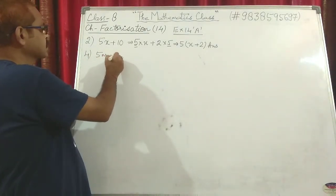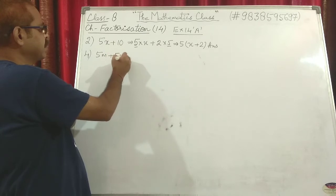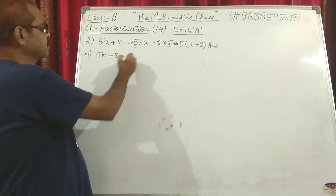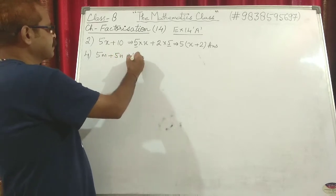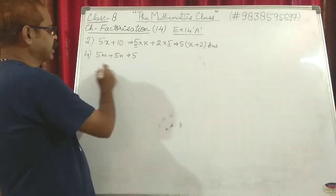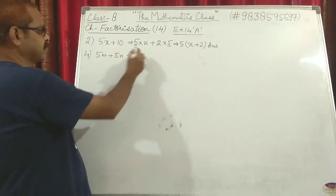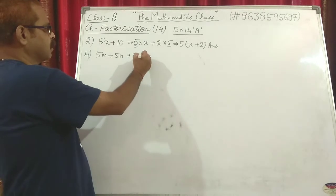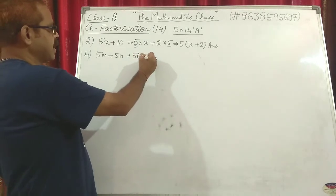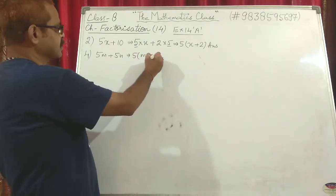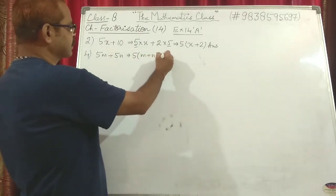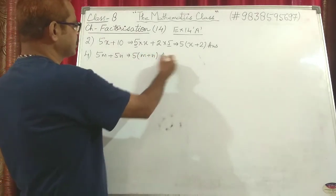Question 4: 5m + 5n. From this you can take 5 common. What is left? m + n. That is the answer.